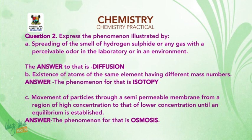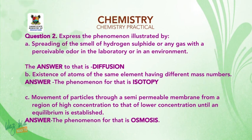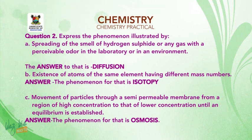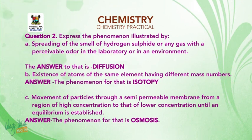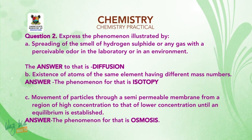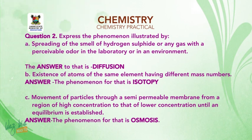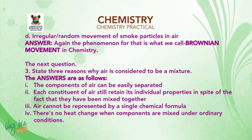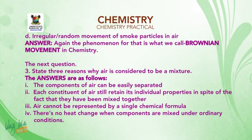Question two: express the phenomenon illustrated by — A: spreading of the smell of hydrogen sulfide or any gas with a perceivable odor in the laboratory — the answer is diffusion. B: existence of atoms of the same element having different mass numbers — the answer is isotopes. C: movement of particles through a semi-permeable membrane from a region of high concentration to lower concentration until equilibrium is established — the answer is osmosis. D: irregular or random movement of smoke particles in air — the answer is Brownian movement.